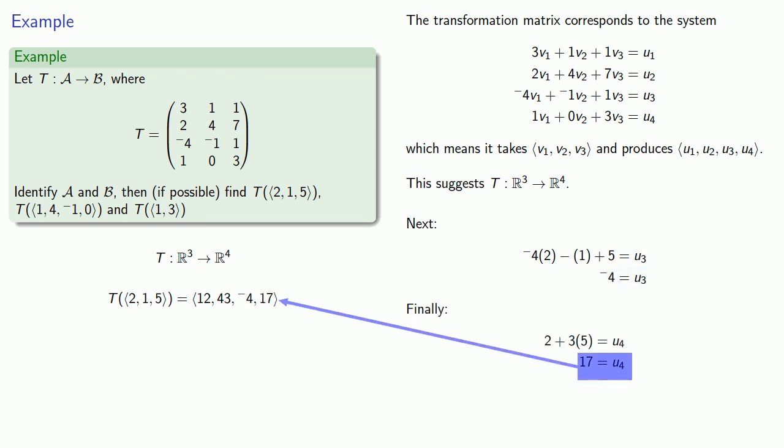And again, because our transformation takes vectors in R³, then the vector with four components and the vector with two components don't live in the right space to be acted on by our transformation. And so the transformation cannot be applied to them. And so we say that the transformation applied to these vectors is undefined.